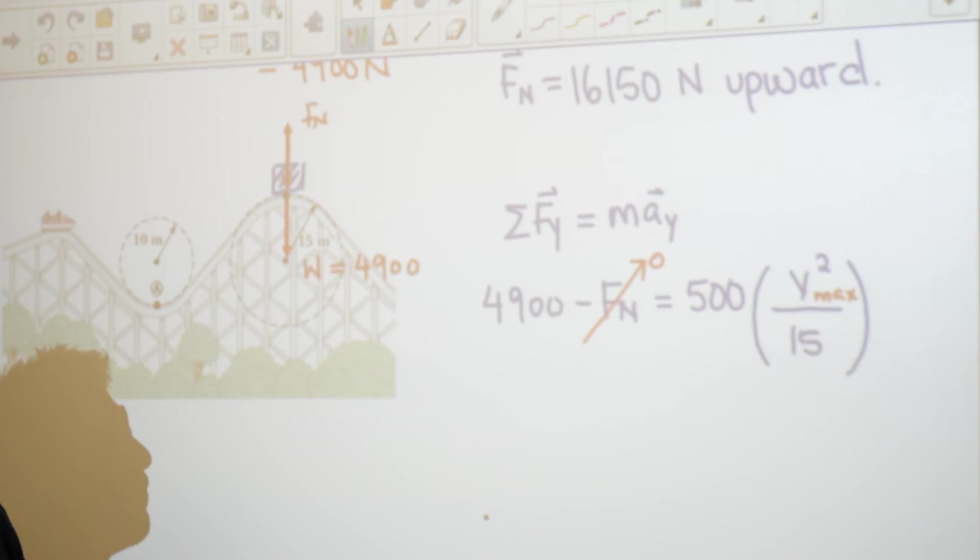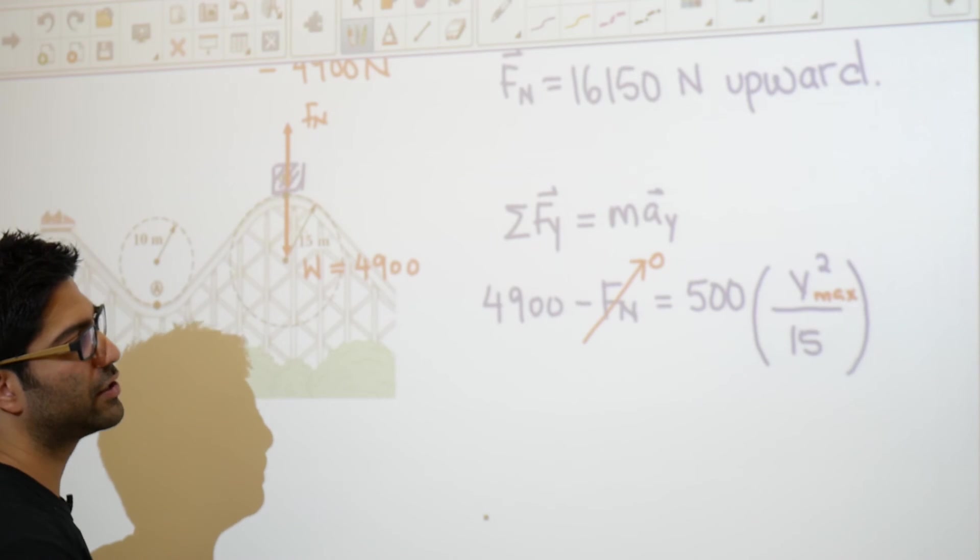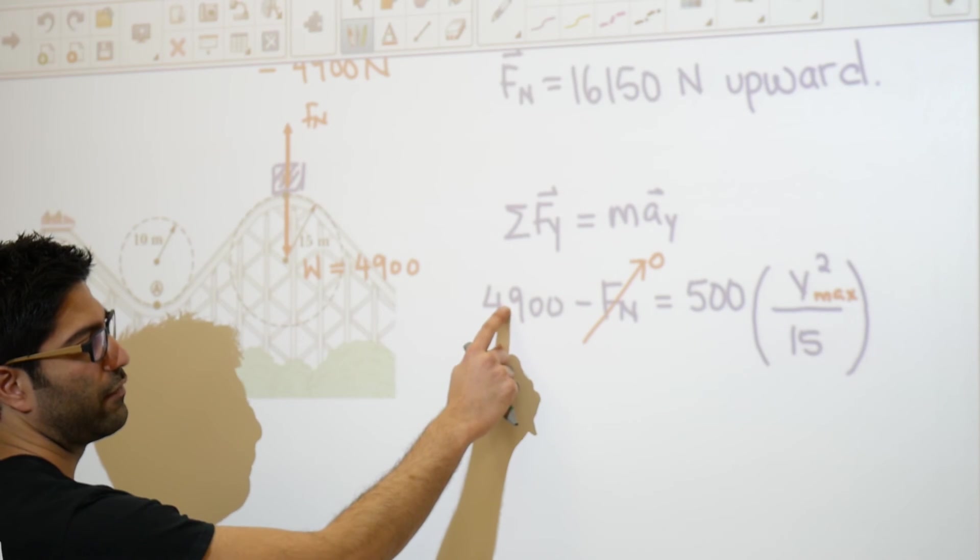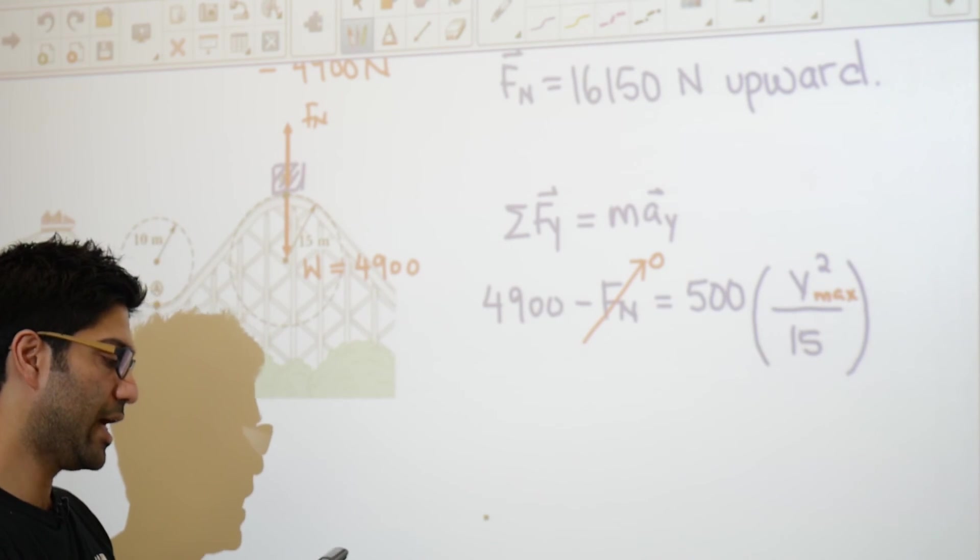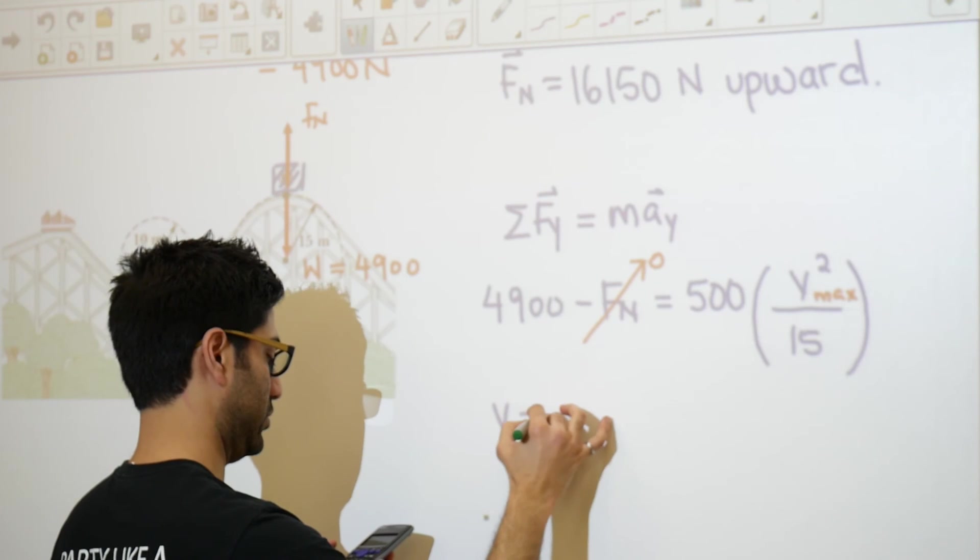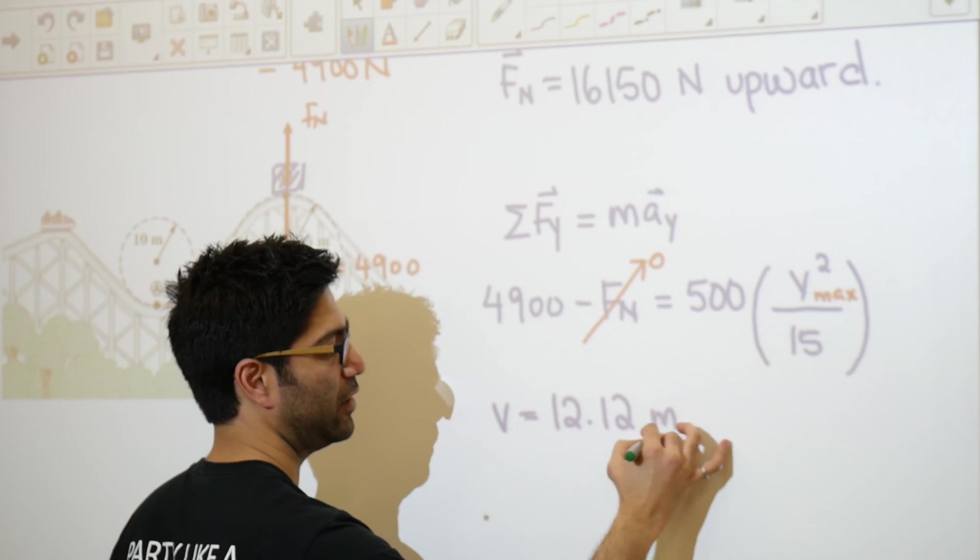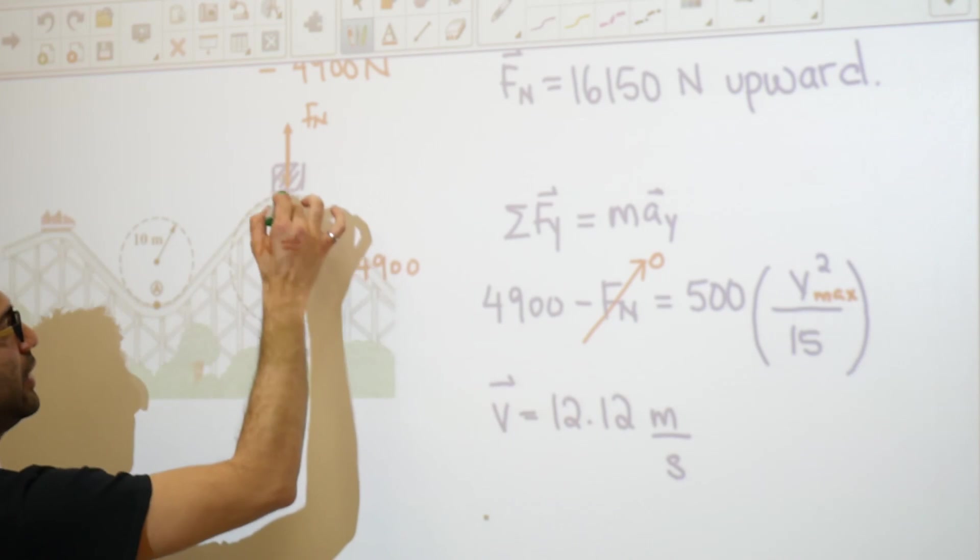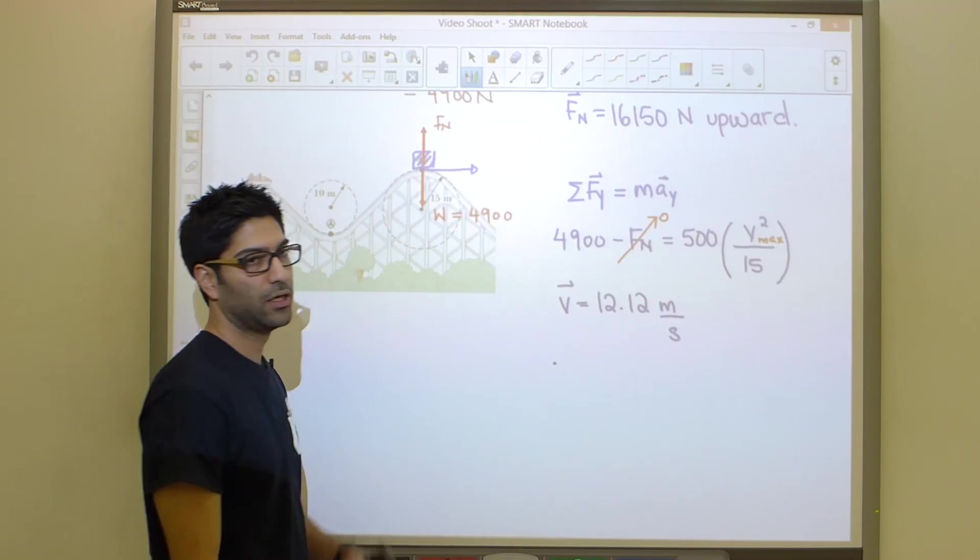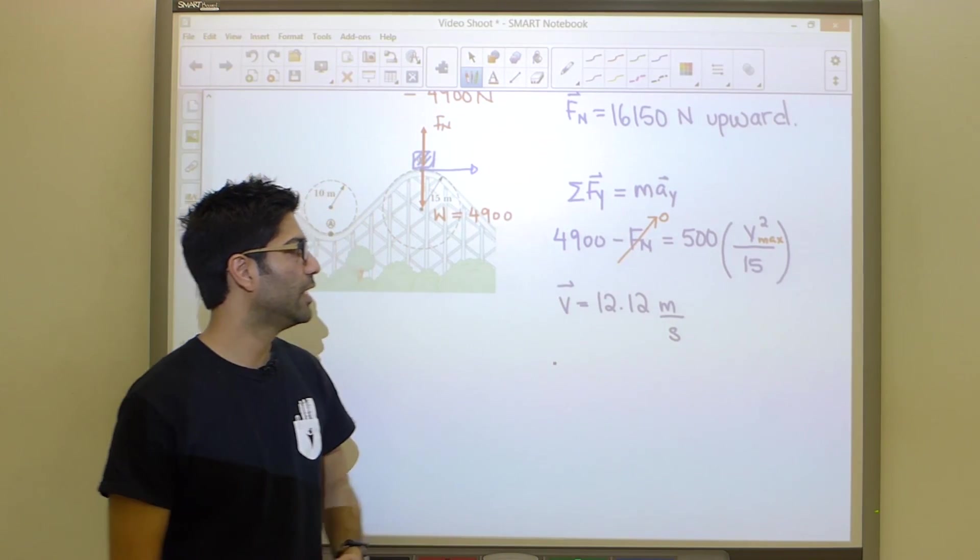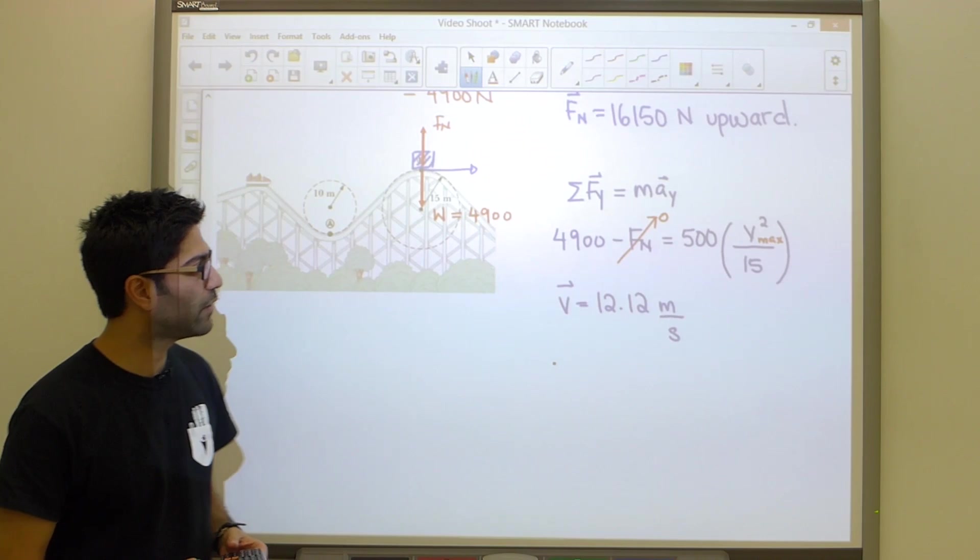Right now it's a matter of solving for V, and that is basic algebra. I'm going to divide 500 by 15, then take 4900 and divide it by my answer, and finally take the square root to give me a velocity equal to 12.12 meters per second. This is a tangential velocity pointing right there. Hopefully that was helpful. It's a little bit of a tricky question, but try and understand why that guy is zero and that'll get the job done. All right guys, let's move on to our next problem.